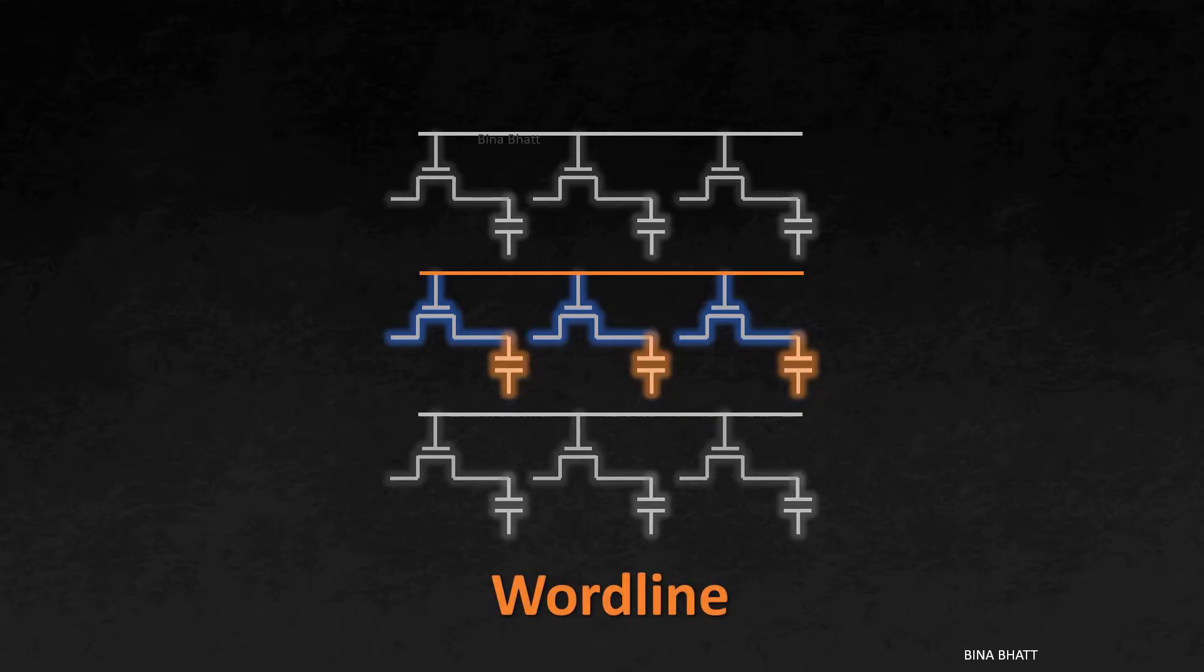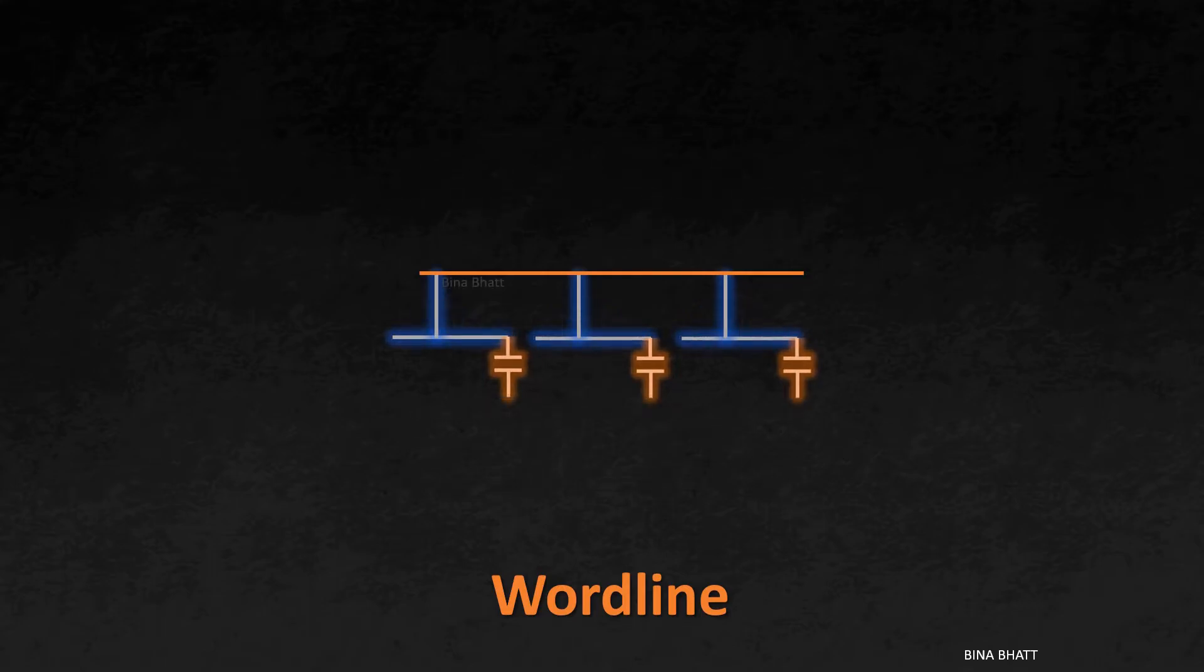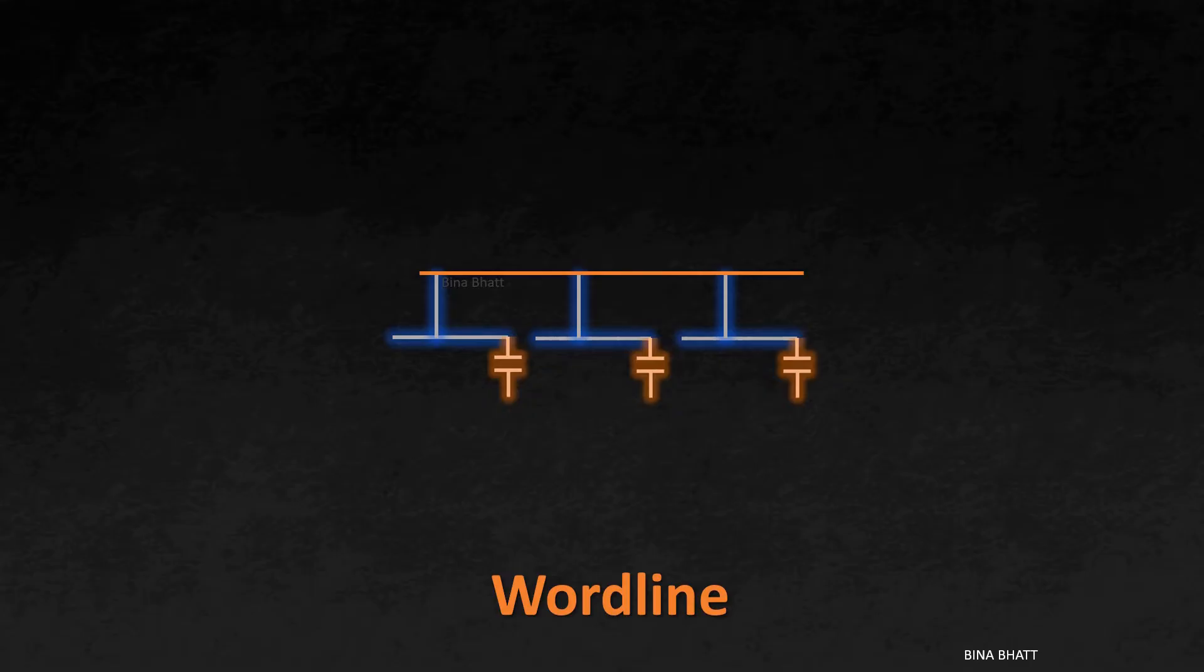Thus, all the access transistors in a row switch on upon asserting the word line. There should also be a provision to transfer data or bit to and from the capacitor of each cell. And for that, there is a vertical line, which is known as data line or bit line.